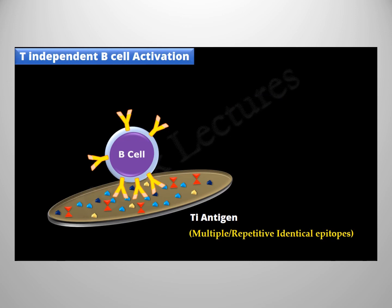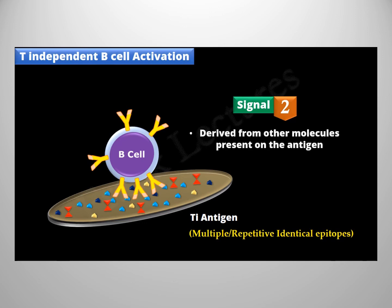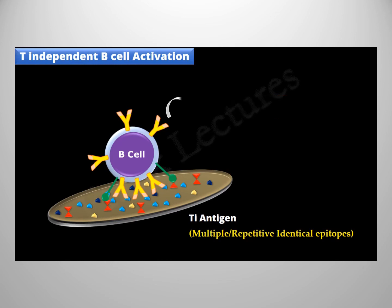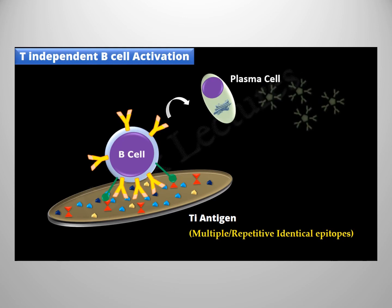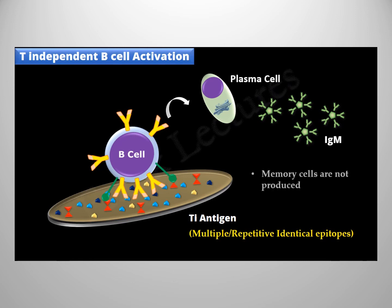To get fully activated, these B cells require a second signal, which can be derived from other molecules present on the antigen. For example, B cells also have toll-like receptors that can recognize various microbial surface molecules. Recognition and binding by toll-like receptors generates the second signal for T independent B cell activation. After activation, these B cells differentiate into plasma cells that mainly secrete IgM antibodies. Memory cells are not produced, or if produced they are very few, because memory cell production requires T cell help.